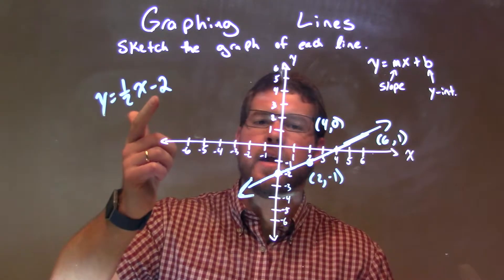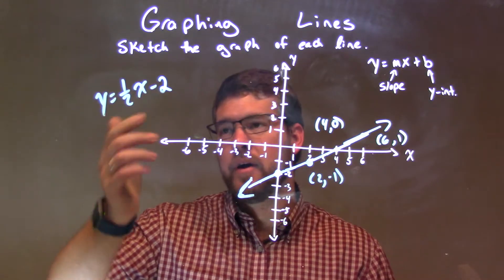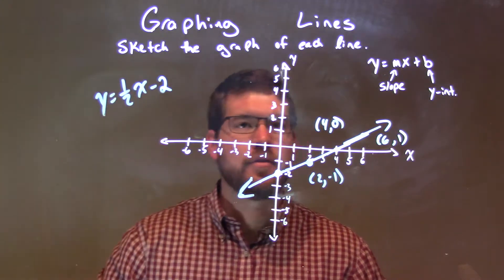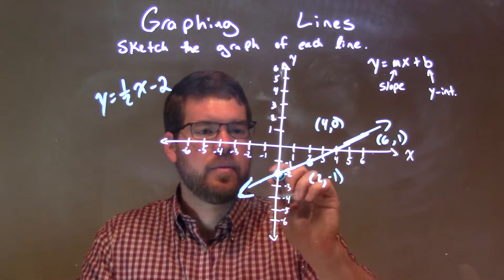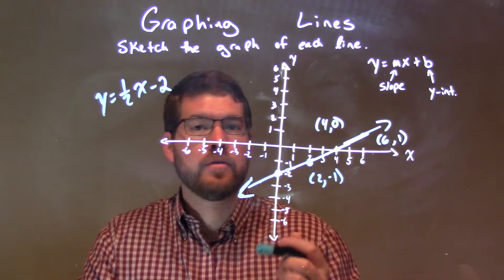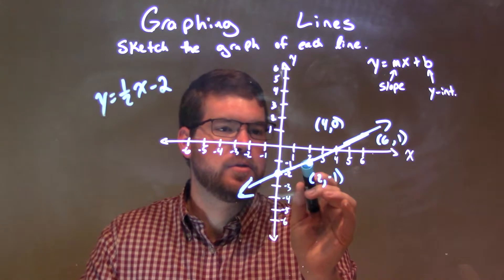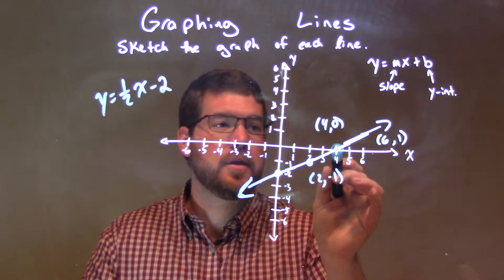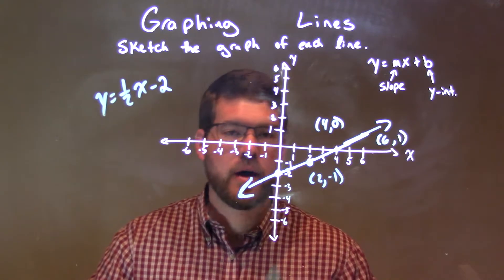So quick recap. We're given the equation y equals one-half x minus two. Negative two is our y-intercept, put a point right there. Our slope is one-half, so we went up one over two units, then up one over two units, then up one over two units, to the positive, to the right.